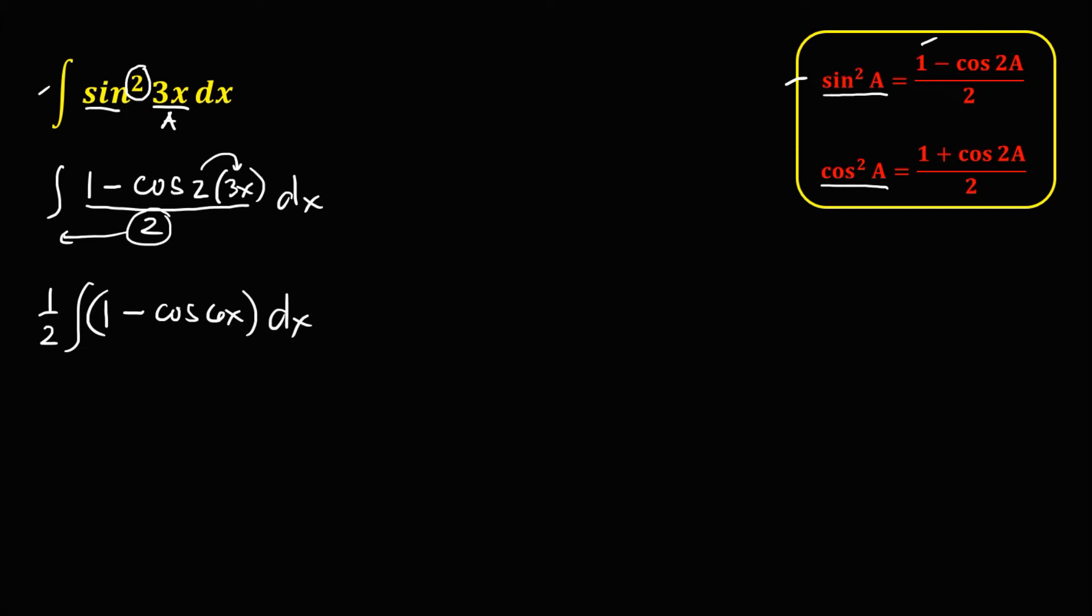Then we need to find the integral for every term. So we have 1 half times the integral of 1 dx, or the integral of dx, then minus the integral of cosine 6x dx.